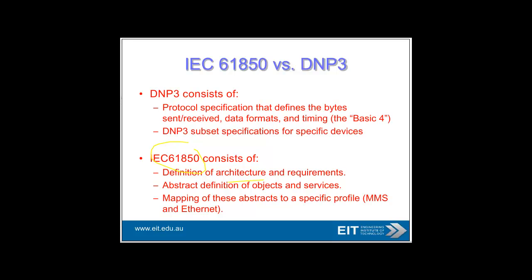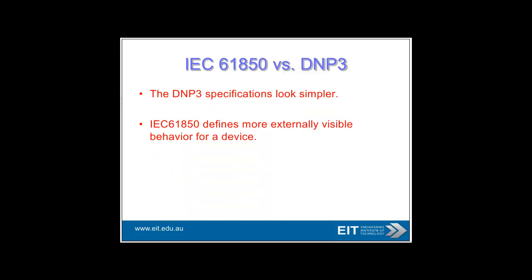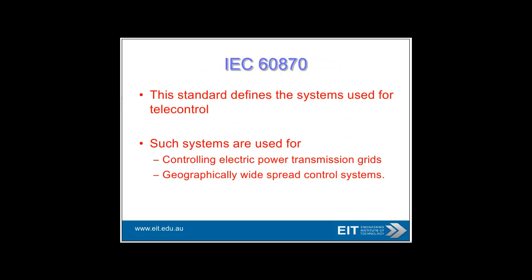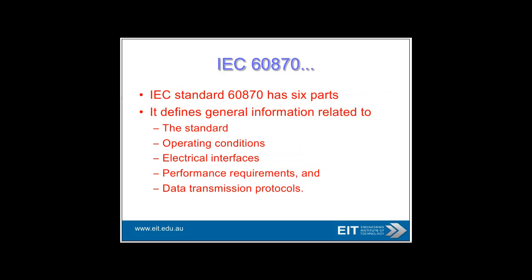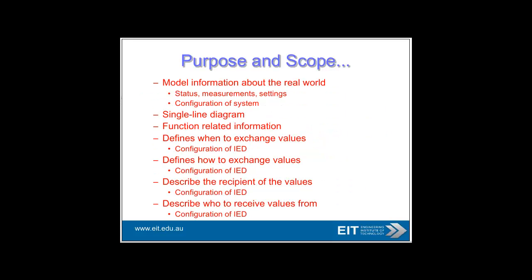IEC 61850 consists of a definition of the architecture, definition of objects and services, and maps to a specific profile — based around the MAP protocol from many years ago. There's also an equivalent to DNP called IEC 60870, which is quite popular in Europe. IEC 61850 is developed to provide a more structured approach, separating the data model from the method of communication. It uses Ethernet, TCPIP, and related protocols as the underlying foundation, and ensures vendor independence so that competing vendors such as ABB and Siemens can provide interoperable solutions. The purpose is to model information about the real world, including single-line diagrams, and to define when and how to exchange values.